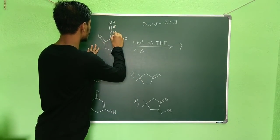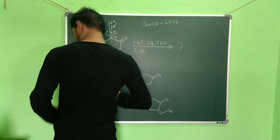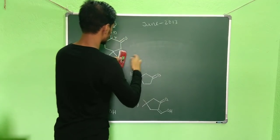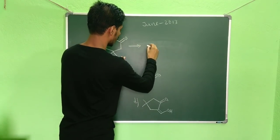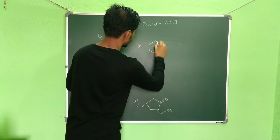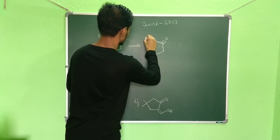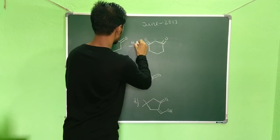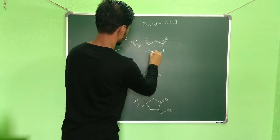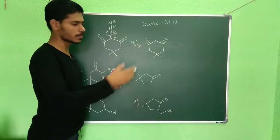...this nitrogen will go out as N₂. So from the first step of the reaction, what you will get is this carbene. The N₂ leaves and you get this carbene — this is the intermediate of the first step.